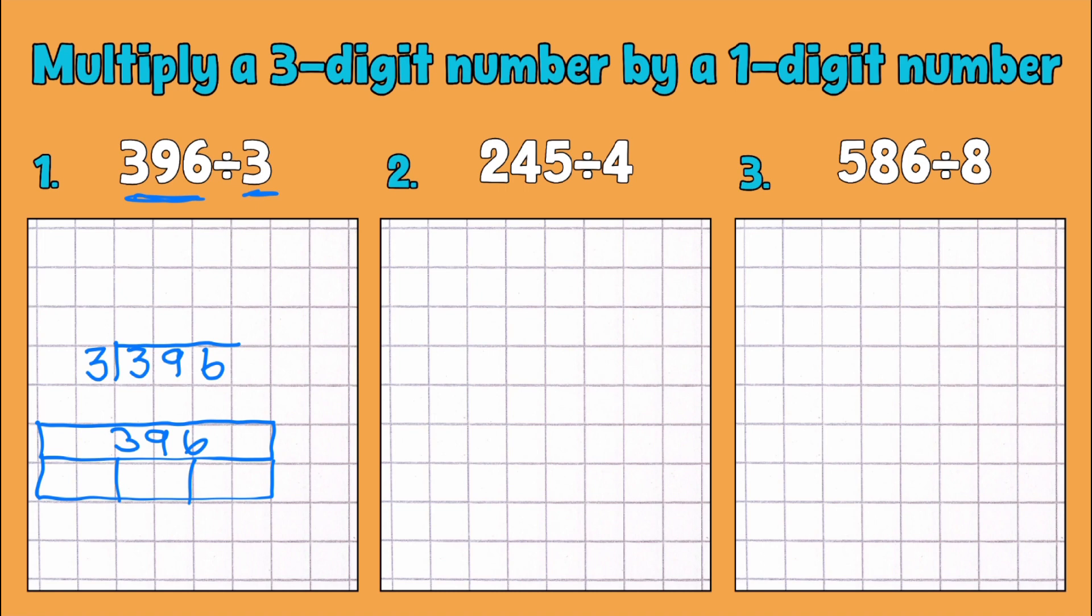And then we think, how many threes can I fit inside a three here? Well, it's a whole one. And then we move on to our next number here. How many threes can I fit inside a nine? That is three, because three times three is nine. And then I move on to my next number. So how many threes can I fit inside a six? That is two. So 132 is our answer. 396 divided by three is 132.